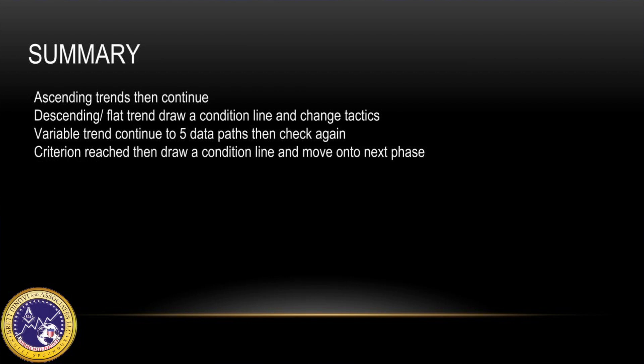Let's summarize. For an ascending trend you're going to continue with the treatment. For a descending trend you're going to draw a condition line and change tactics. For a variable trend you're going to continue for five data paths and then check back again. As soon as criteria is reached, you're going to draw a condition line and move to the next phase. Without a tool such as this one to guide treatment, an ineffective intervention may continue for too long, or an effective treatment may be discontinued prematurely.